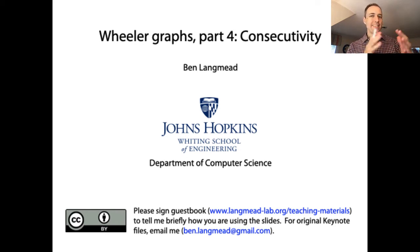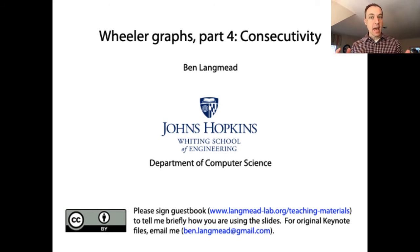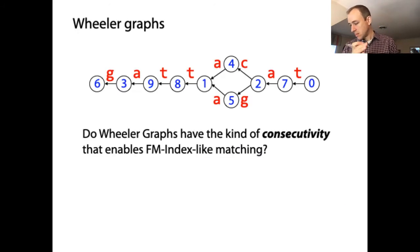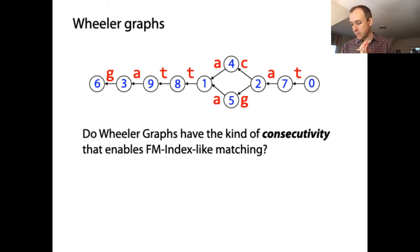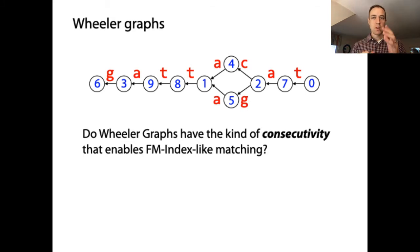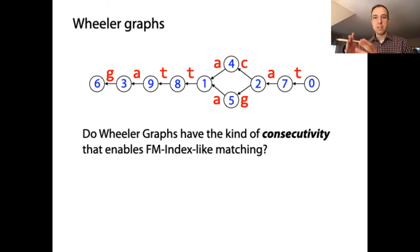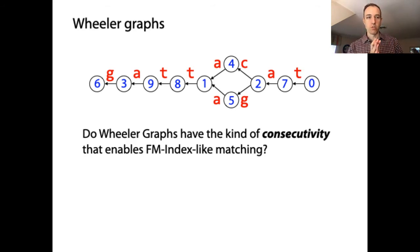We now want to establish why the definition of the Wheeler graph gives us the consecutivity property that we would like it to have, so that we can do matching like we did in the FM index. Do Wheeler graphs have the same kind of consecutivity property that enables FM index-like matching? We've looked at examples and it looked like it was true, but now that we have the definition we can perhaps prove it.